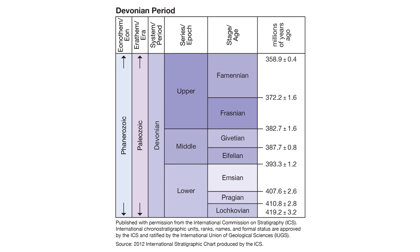When groups and supergroups can be correlated across the globe, they are organized into larger chronostratigraphic units, or bodies of rock representing intervals of time in the past. Groups and supergroups make up globally recognizable stages, which are hierarchically organized into series, systems, erathems, and eonothems.